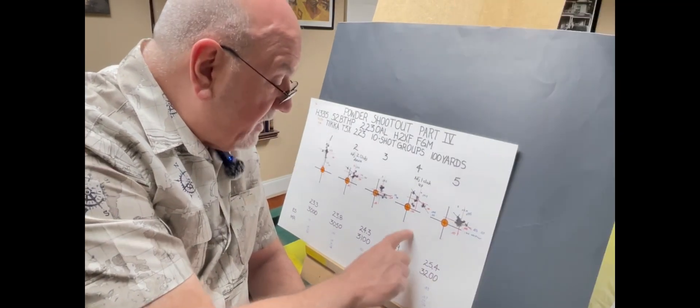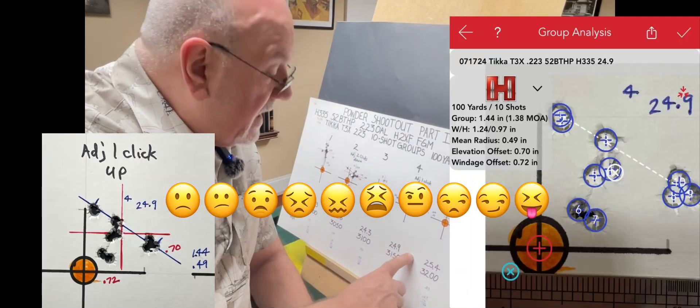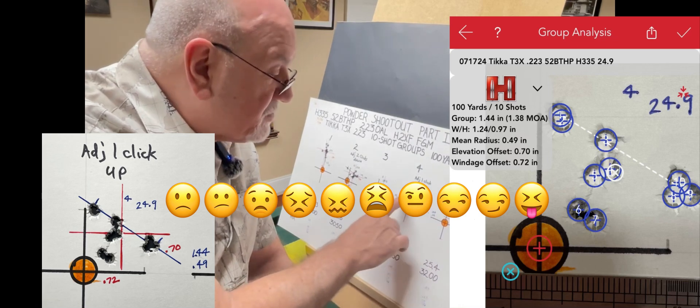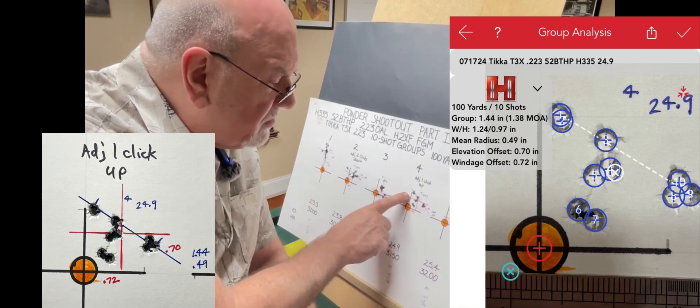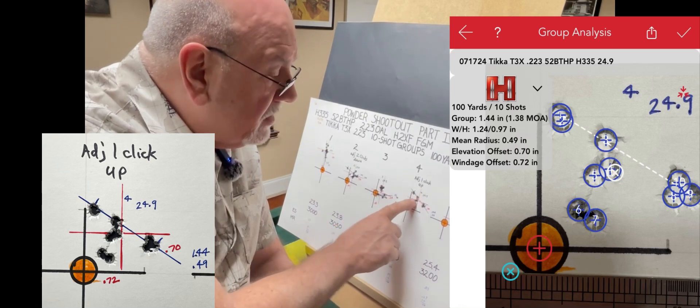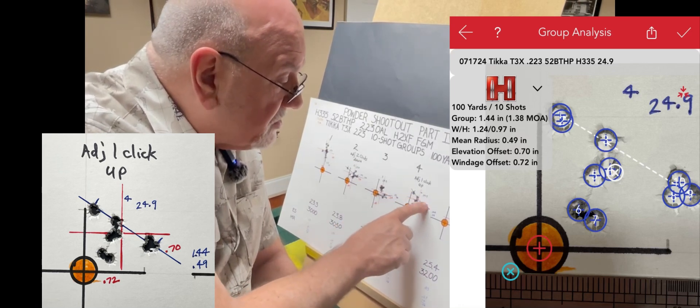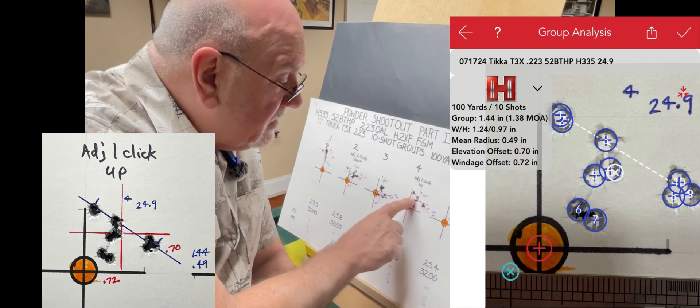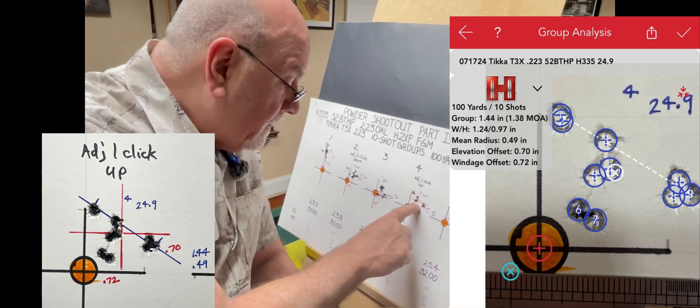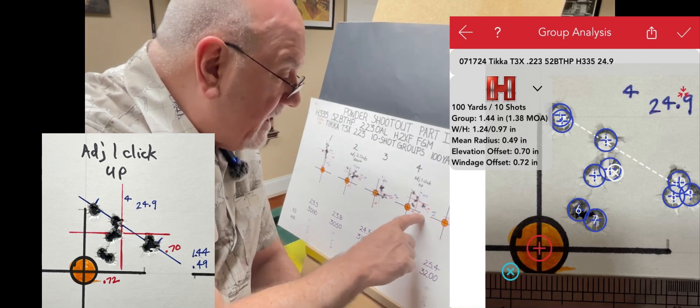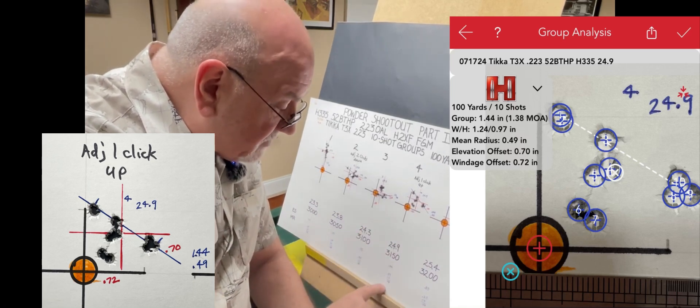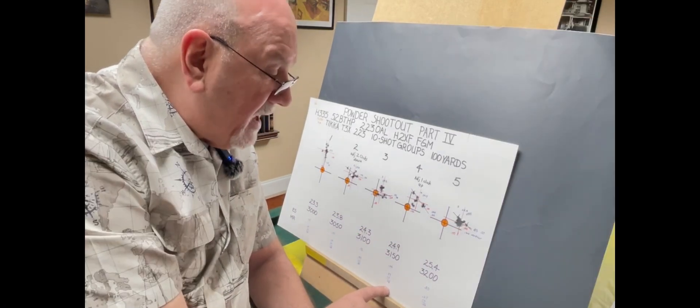Moving up to 24.9, we've got an extreme spread of 1.44 inches, so these are kind of spread out, although you've got a flyer here, and you've got nine that are clustered together here at probably just over an inch. But you've got a mean radius of 0.49, so that gives you an average group size of just under an inch at 0.98.